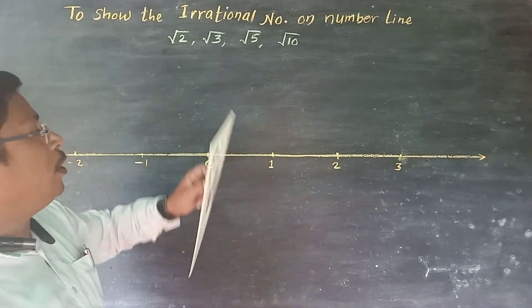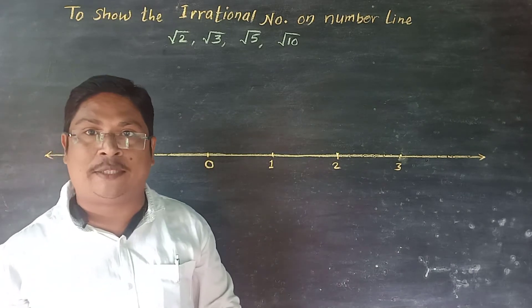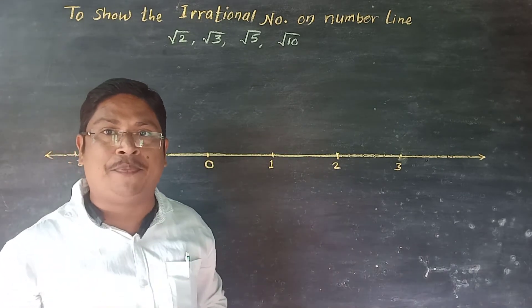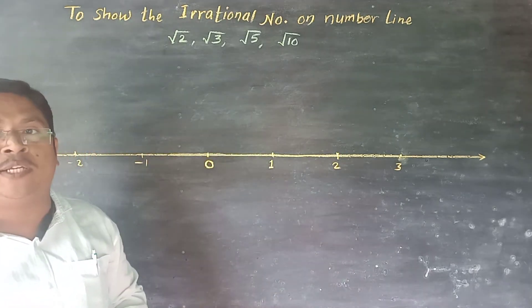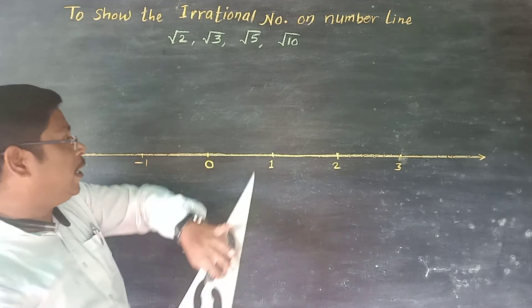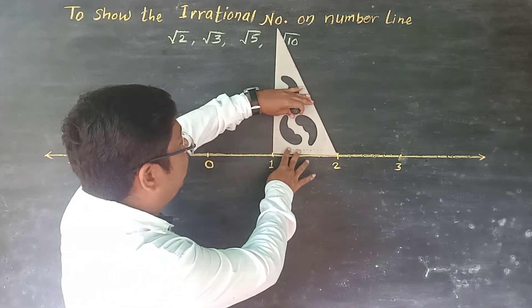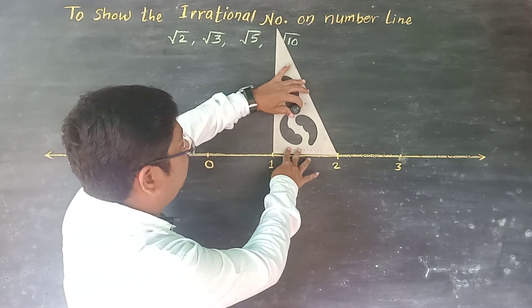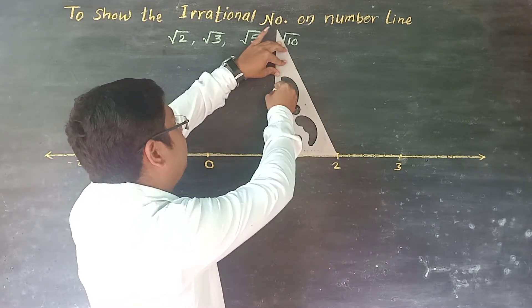We require here root two on the number line. By using set square, draw one unit perpendicular.